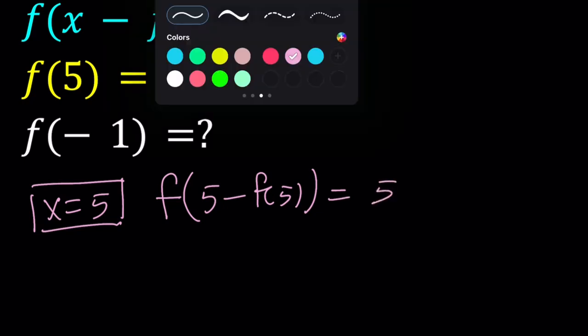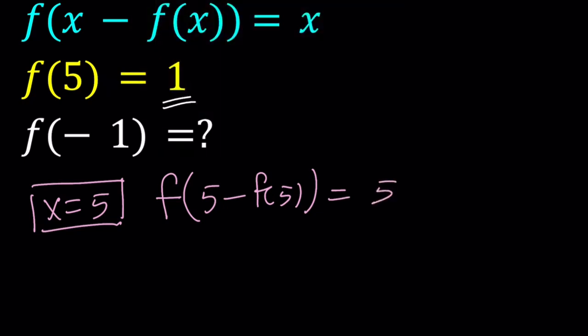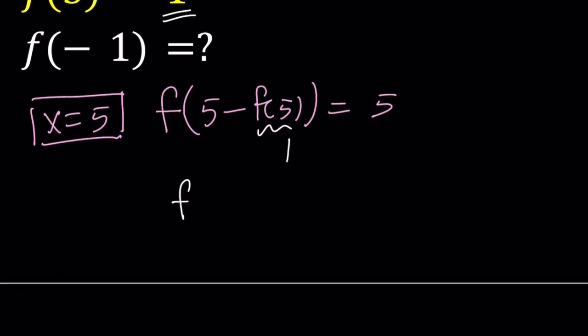Now we're given that f of 5 is equal to 1. So we can replace f of 5 with 1. That gives us f of 5 minus 1, which is f of 4 equals 5. Great.